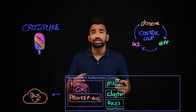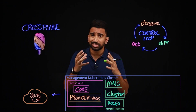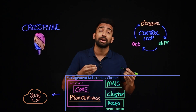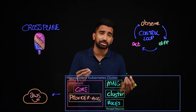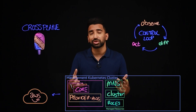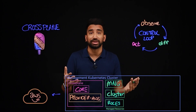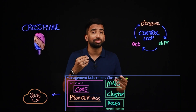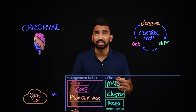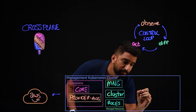Now, managed resources are the building blocks of Crossplane, actually designed to be composed by higher level opinionated custom resources. Working with Kubernetes, custom resources are a way to extend the power of Kubernetes to resources that are not built in. Now, Crossplane calls these composite resources, or XRs.